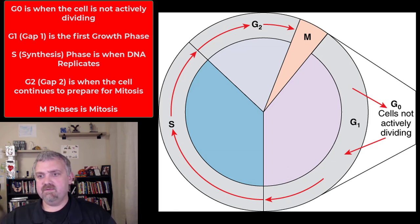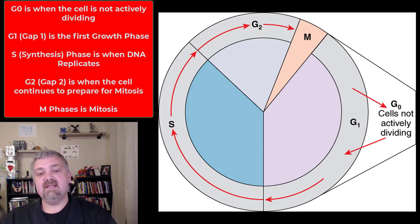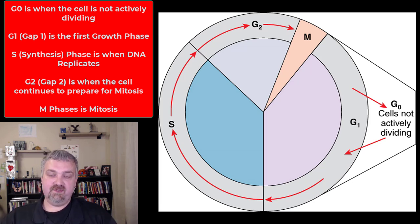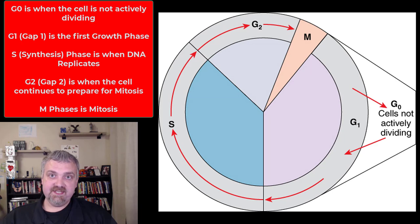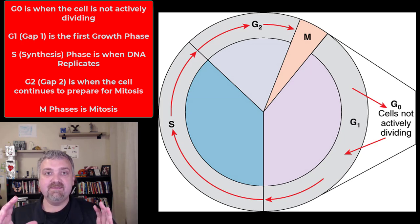You see this first bit of growth, but then if a cell is going to divide, it's going to go into S phase. S phase stands for synthesis phase. This is going to be where the cell replicates its DNA. If one cell with 46 chromosomes is going to divide and form two cells with 46 chromosomes, it has to duplicate its chromosomes — and that's what happens during the S phase.